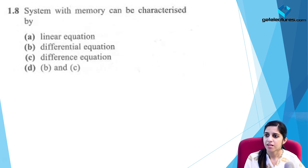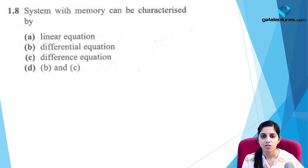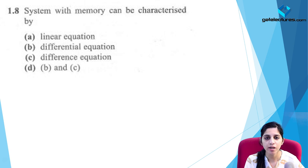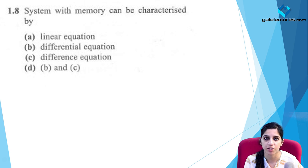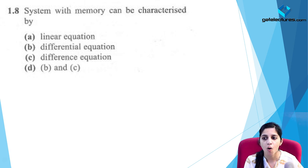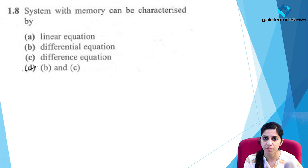A system with memory can be characterized by differential or difference equations. A system with memory retains values of the past. Differential equations are used for continuous time systems and difference equations for discrete time systems, since they give the value one instance before. The correct option is D.